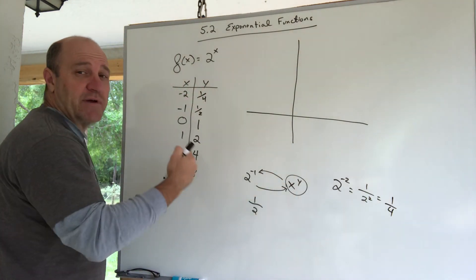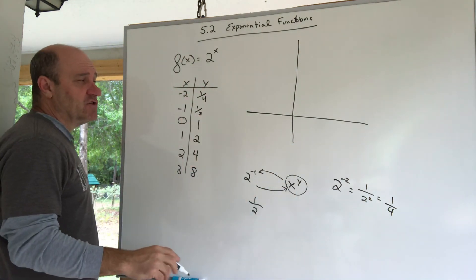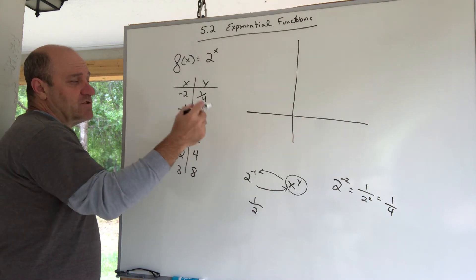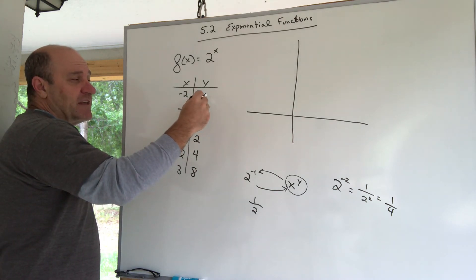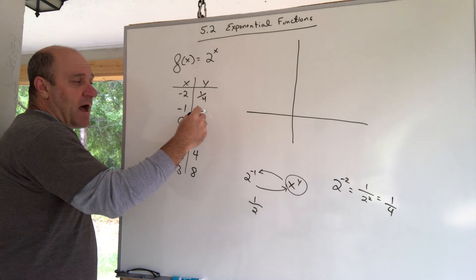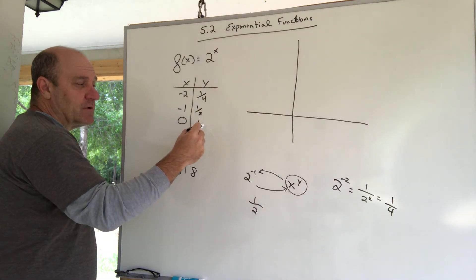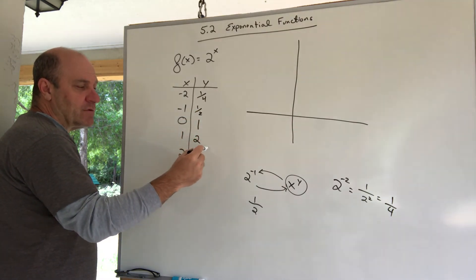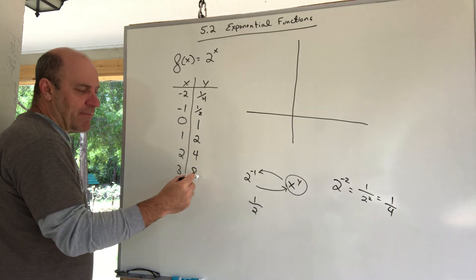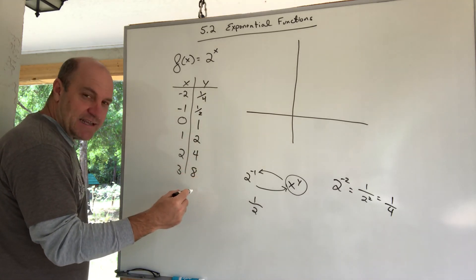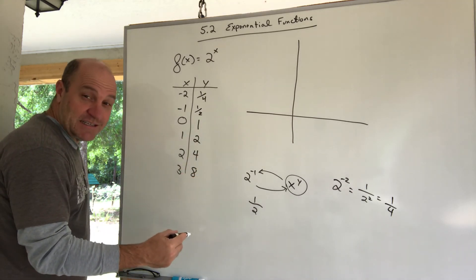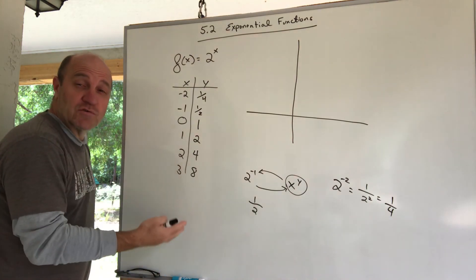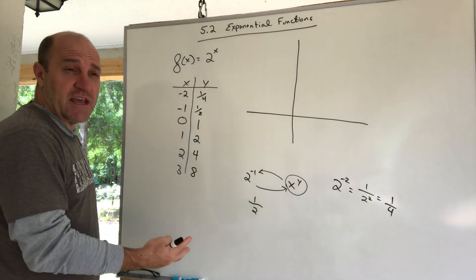What about 2 to the negative two? The calculator will help big time in this chapter. But anyway, that is one over two squared, which is one-fourth. So here it is, I want to plot these points and get a picture of this function. But notice, to get from one Y to the next Y, we multiply by two. The next Y is 16, 32, 64, 128. It grows very quickly, it exponentiates.